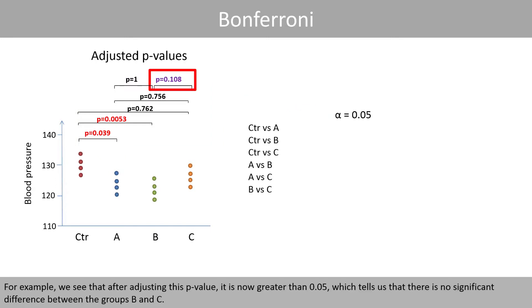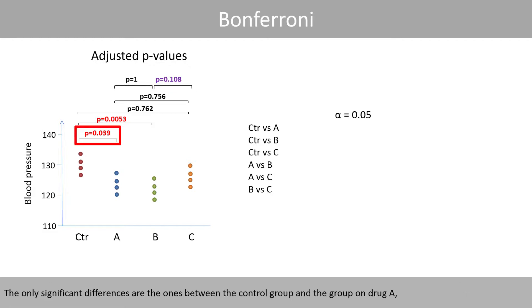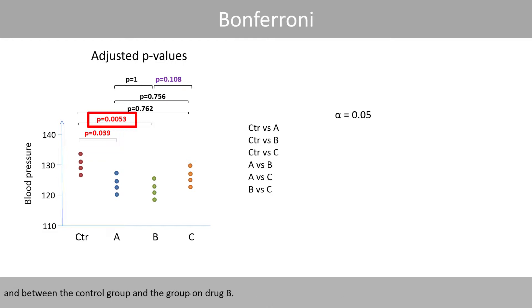For example, we see that after adjusting this p-value, it is now greater than 0.05, which tells us that there is no significant difference between groups B and C. The only significant differences are the ones between the control group and the group on drug A, and between the control group and the group on drug B.